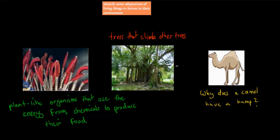If I were to tell you that there are camels that have humps, there are trees that climb other trees—you might see them here, these are things hanging off them, the different trees that actually climb this tree—and there are actual plant-like organisms that use chemicals to produce food, not sunlight. Usually all plants use sunlight, these use chemicals.